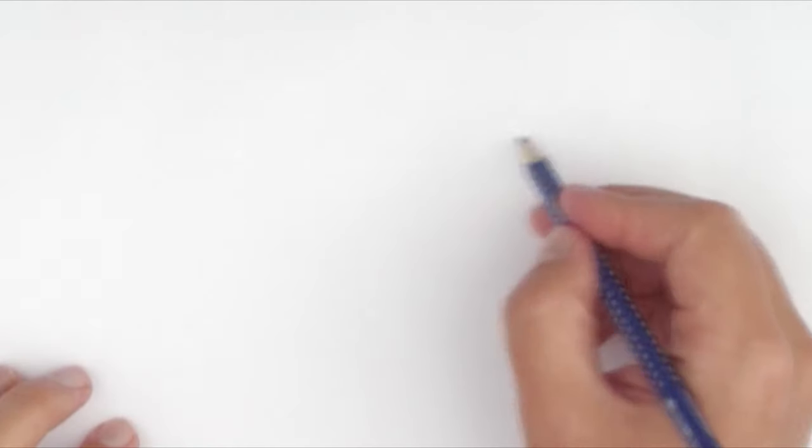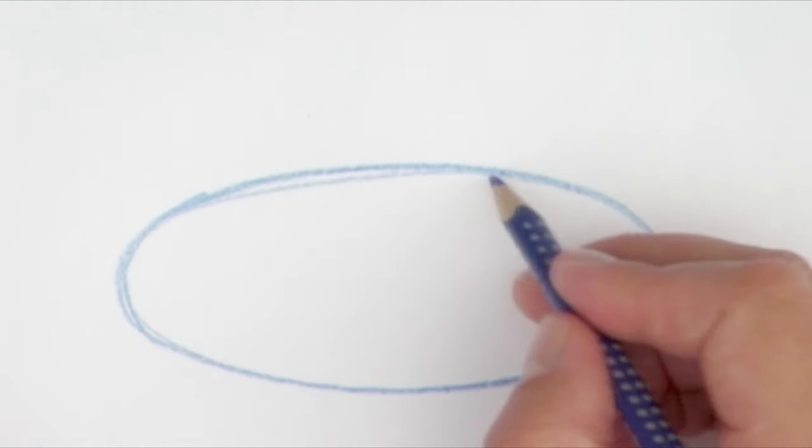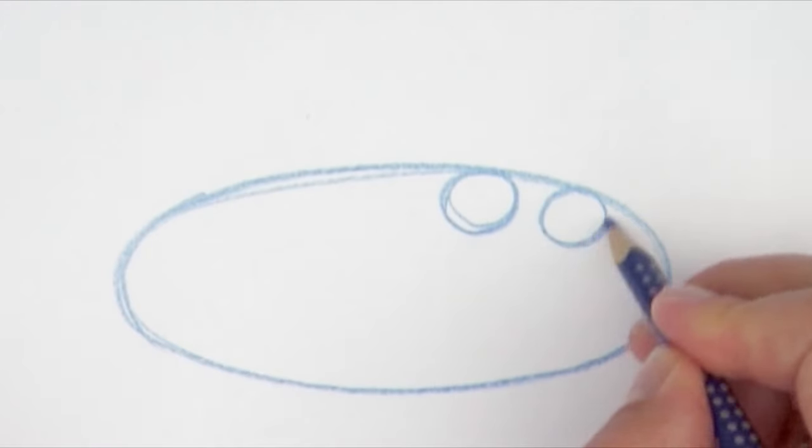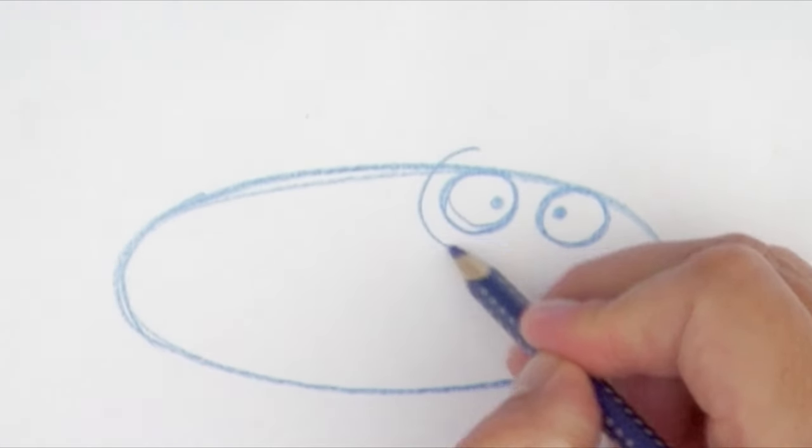Then I draw an oval. An oval is kind of like a circle but a bit squeezed. Then I draw two small circles at the top of the oval—those are the eyes. Around the eyes, I draw two rings.